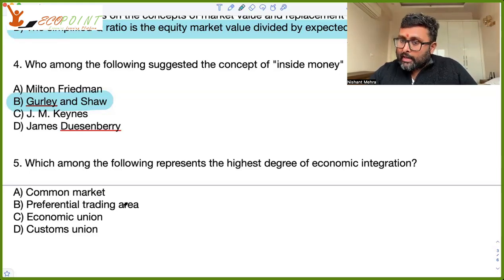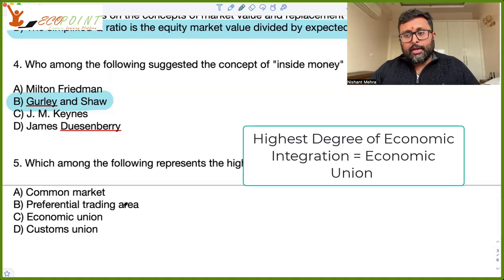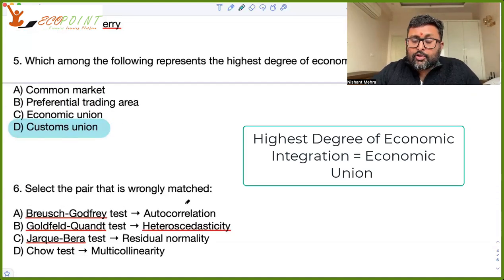Then you have common market. So common market has all the characteristics of customs union but it is also allowing the free movement of labor and capital across borders. And then you have economic union. This involves highest level of coordination including a common currency in some areas. For example, in eurozone.